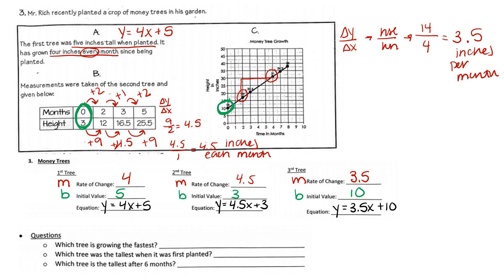Now we compare all the trees. Question one: which tree is growing fastest? That's the rate of change. Tree one is 4 inches per month; tree two is 4.5 inches per month; tree three is 3.5 inches per month. So tree two is growing fastest at 4.5. Question two: which tree was tallest when first planted? That's the initial value. Tree one is 5 inches; tree two is 3 inches; tree three is 10 inches. So tree three is the tallest at 10 inches.